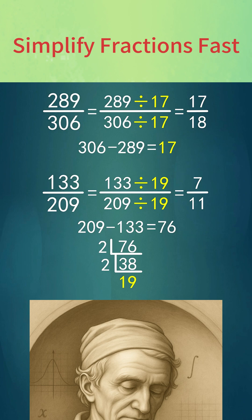If the difference is composite, use short division to factor it. The last prime factor you get is the greatest common divisor.